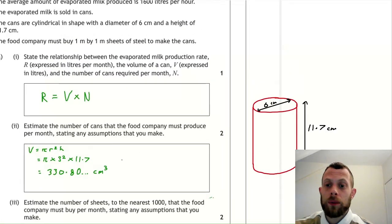So the volume of one can is 330.80 cubic centimeters. So now we need to work out how many cans they need.